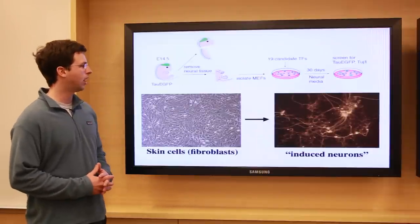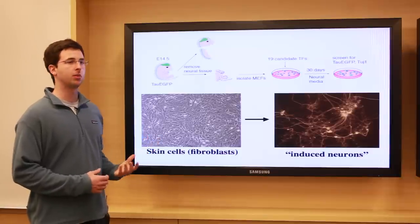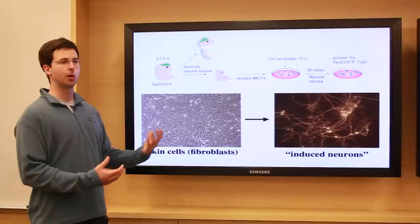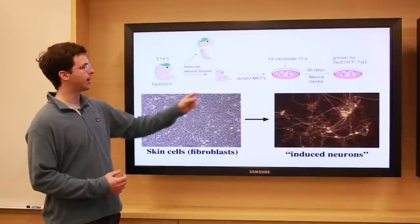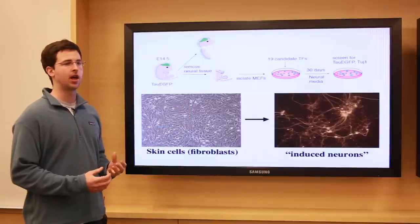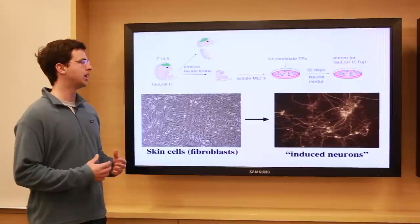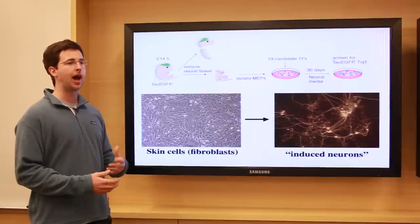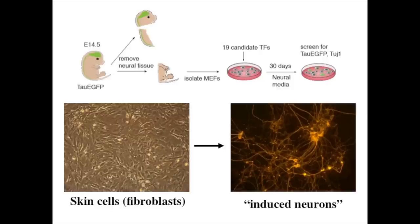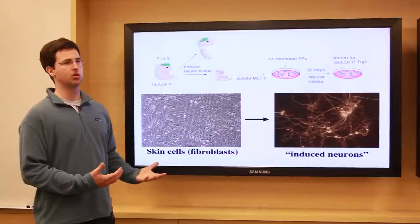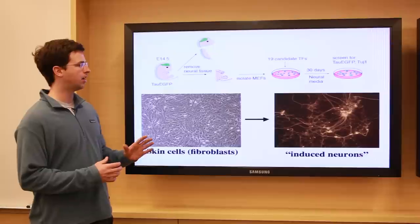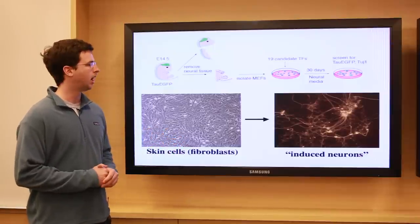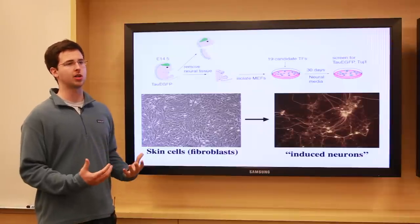To do this, we hypothesized — similar to the approach taken to reprogram fibroblasts to a pluripotent state — that we could take candidate transcription factors: 19 candidate transcription factors involved in making neurons during development. We reasoned these would contain the information required to recapitulate neuronal differentiation outside of its normal context. By introducing all 19 of them into skin fibroblasts, not knowing which ones would be effective, we found that we got what we called induced neurons — cells that came from the fibroblast culture and looked like neurons. This was a promising initial step, but we really needed to characterize these cells further.